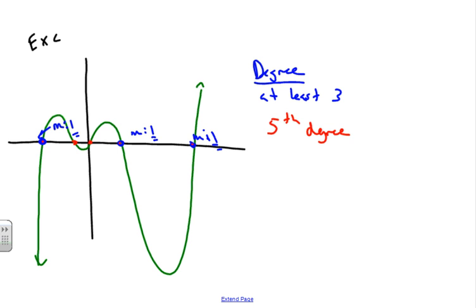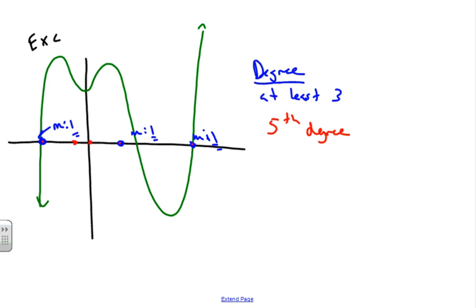In the original problem, it is a fifth degree. The reason is that there are two extra zeros that are complex or imaginary. Complex zeros create values that are either above or below the x-axis — you do have maxima and minima — but they are not real zeros that can be graphed on a real coordinate plane.